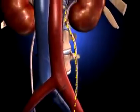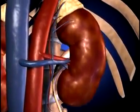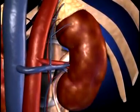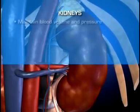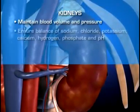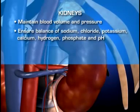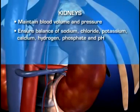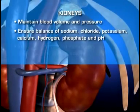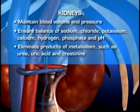The kidneys also selectively reabsorb those substances that are needed to maintain the normal composition of the blood. By adjusting blood composition, the kidneys are able to maintain blood volume and pressure, ensure the proper balance of sodium, chloride, potassium, calcium, hydrogen, phosphate, and pH, and eliminate products of metabolism such as urea, uric acid, and creatinine.